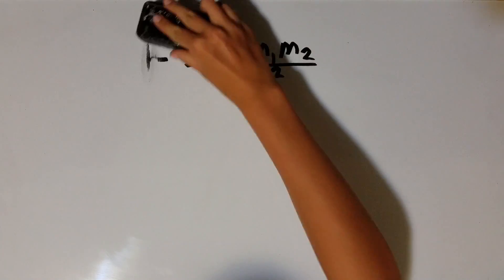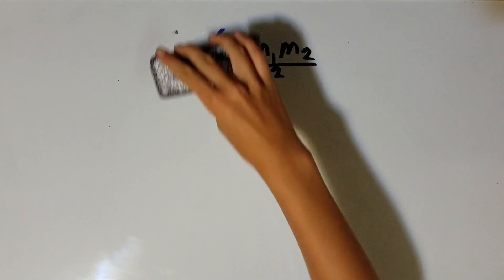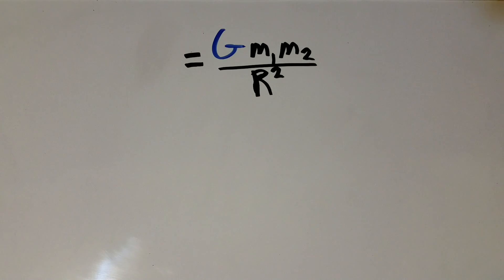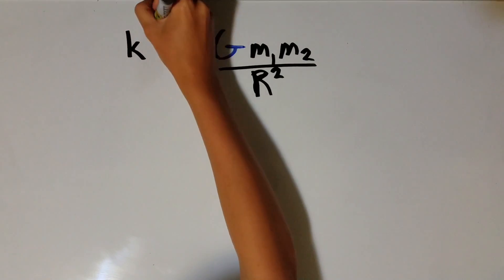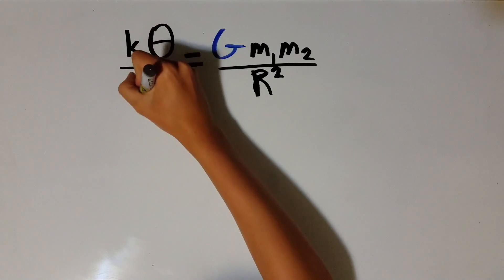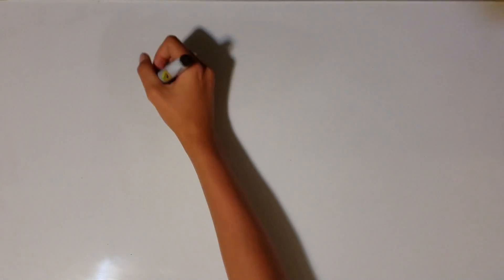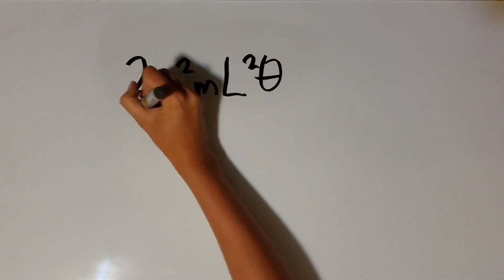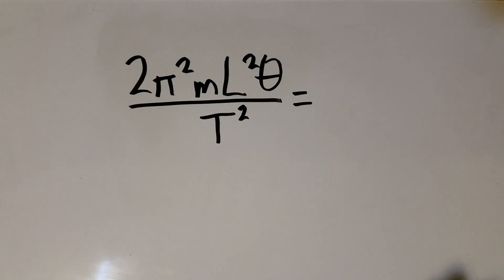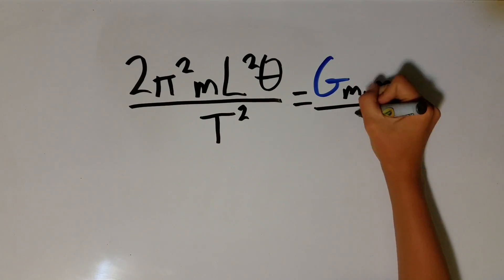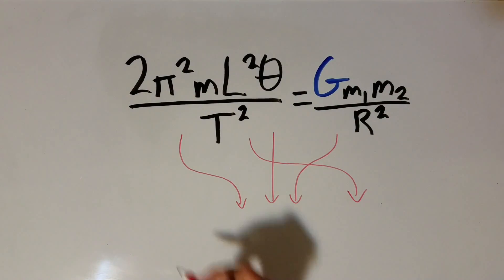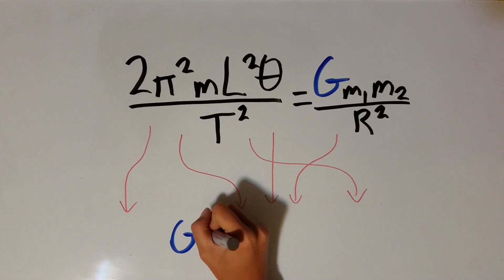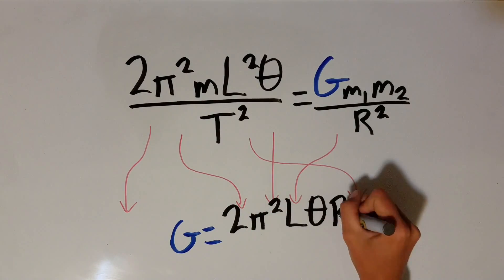This is accomplished through substituting kappa theta over L for F, where K, or kappa, is the torsion coefficient of the string and theta is the angle the bar turns from the rest position to the equilibrium point measured in radians. K can then be replaced by 2 pi squared ML squared theta divided by T squared, where L is the total length of the bar in meters. With some rearranging, the equation becomes G equals 2 pi squared L theta R squared divided by T squared M.